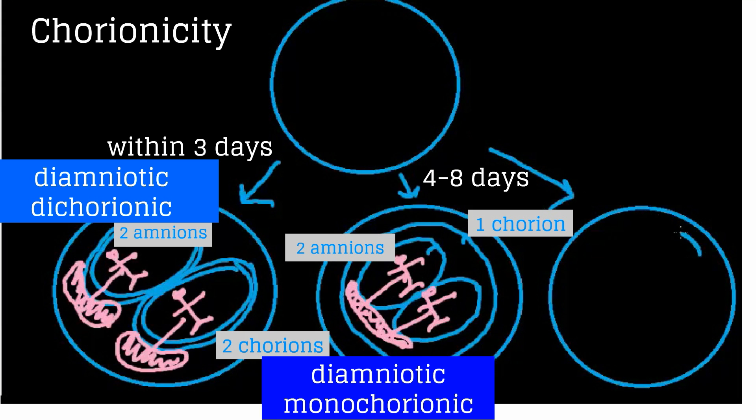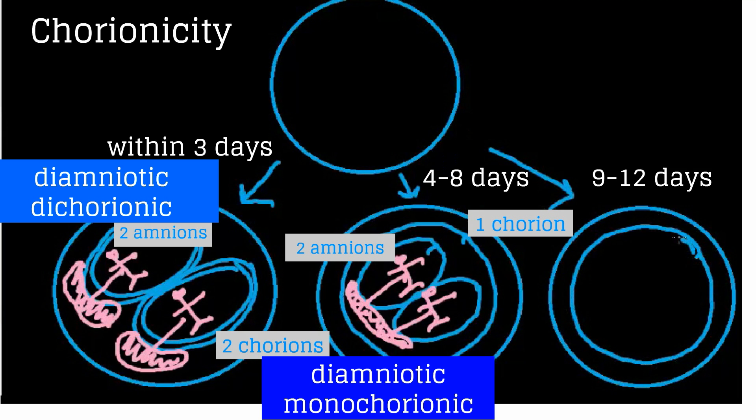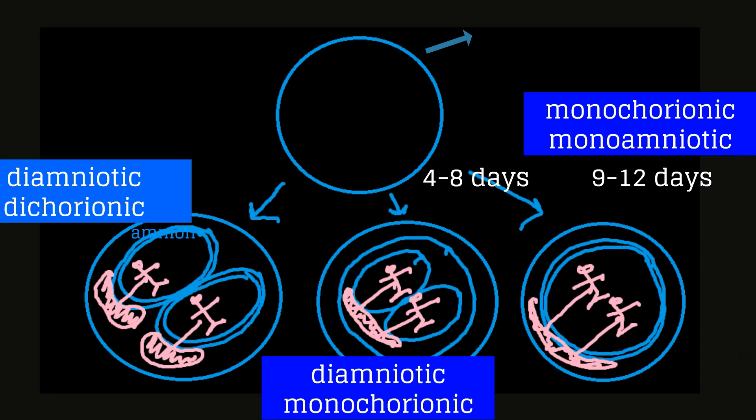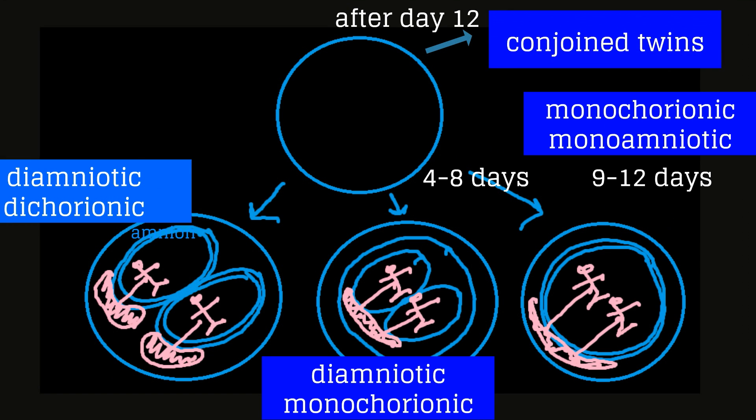If division occurs between days nine through twelve, there will be one chorion, one amnion, one placenta, and the fetuses will be in a common sac. These are monochorionic, monoamniotic twins. If division occurs after day twelve, then conjoined twins will develop.